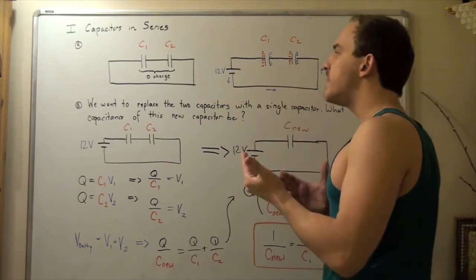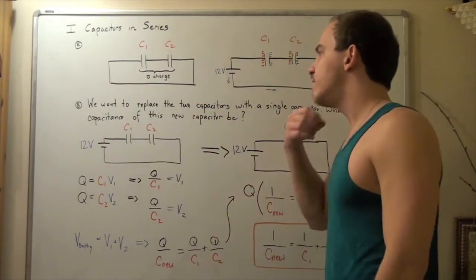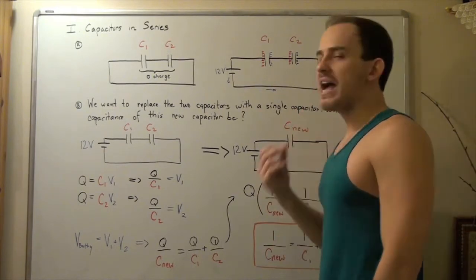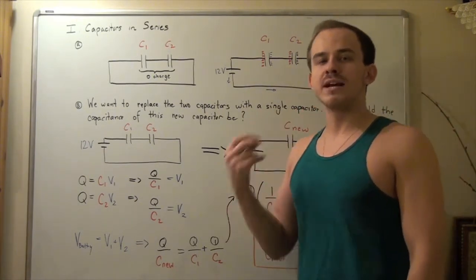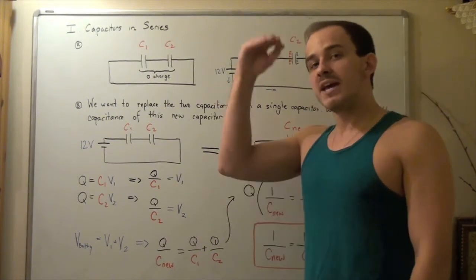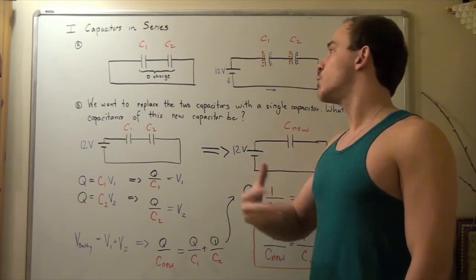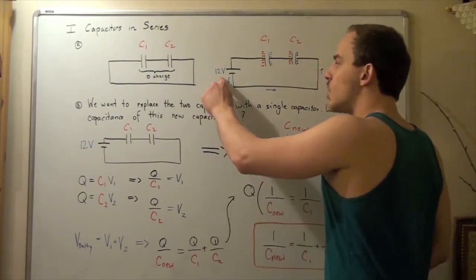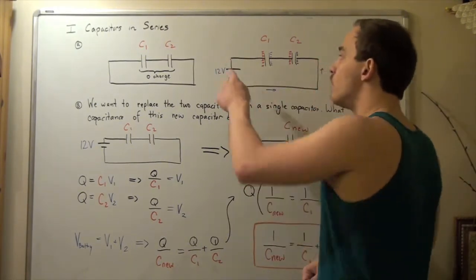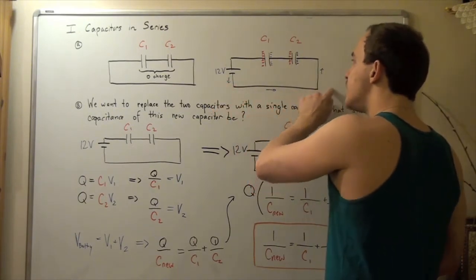Now let's jump to electric circuit number two. In this electric circuit, we basically took circuit one and incorporated a battery that has a voltage of 12 volts. Now there is an electric potential difference, meaning our electrons will flow from a higher electric potential to a lower electric potential — from our anode all the way around to our cathode. By convention, current will flow in the opposite direction to electron flow.